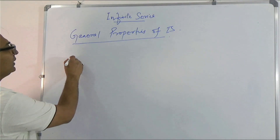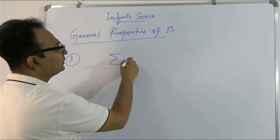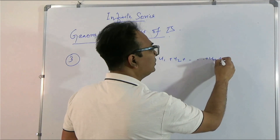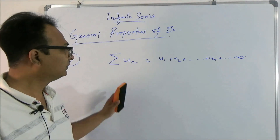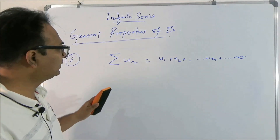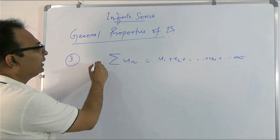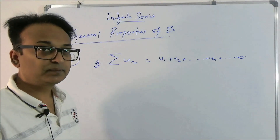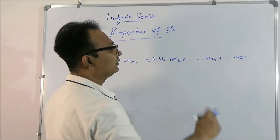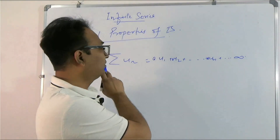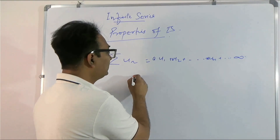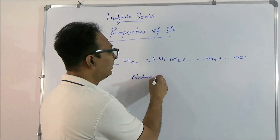The third property states that if we have a series u1 plus u2 plus ... to infinity — whether it is convergent, divergent, or oscillatory — and if we multiply it by a finite number, that is, each term is multiplied by a finite number 'a', the nature of the series remains the same.